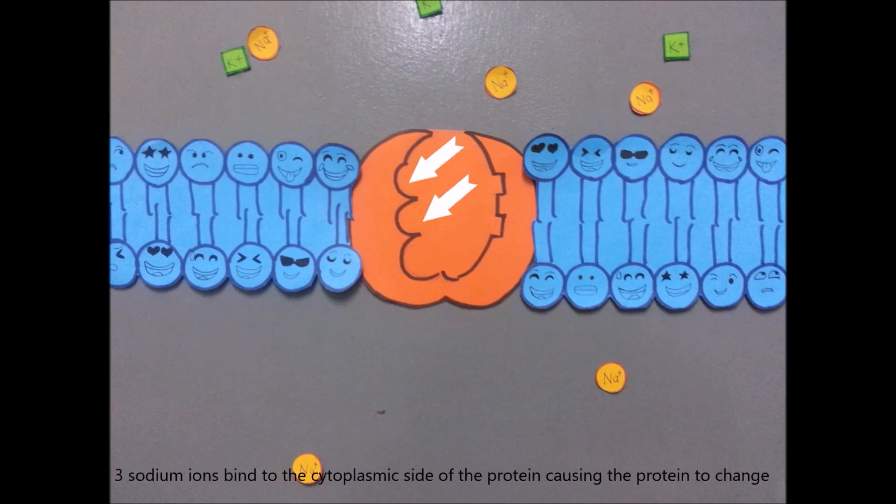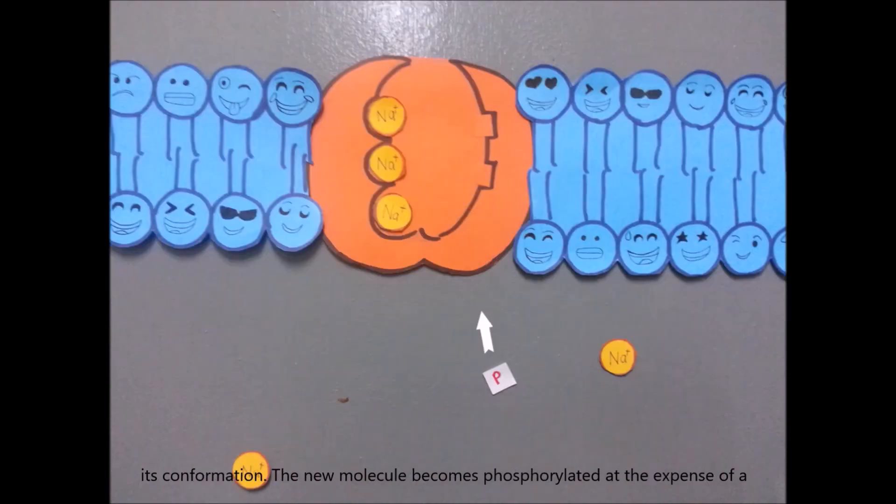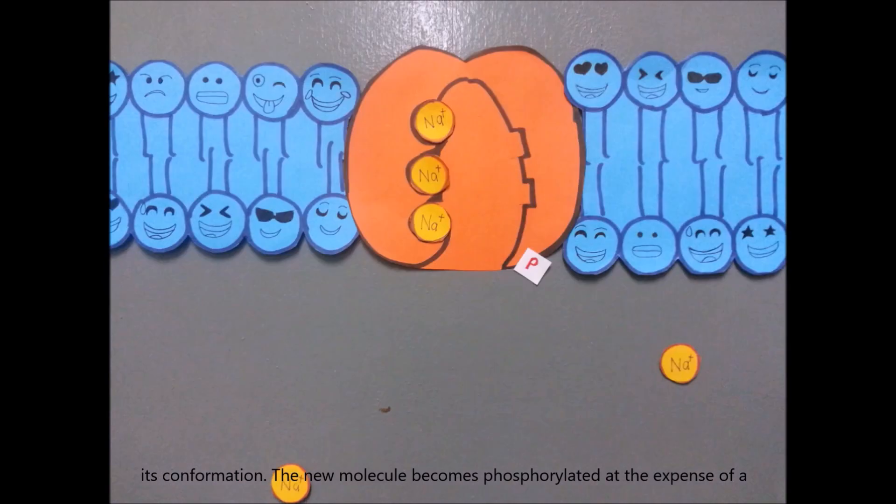Three sodium ions bind to the cytoplasmic side of the protein causing the protein to change its conformation. The molecule becomes phosphorylated at the expense of a molecule of ATP.